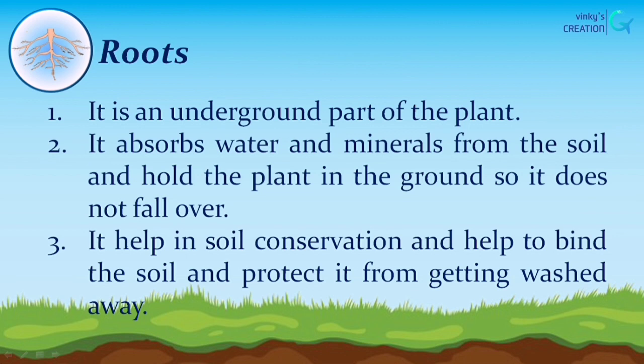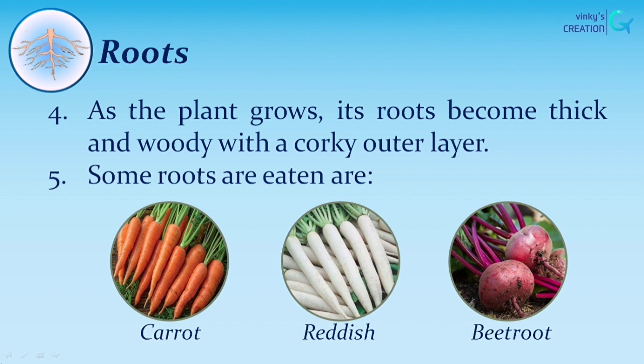Now let's learn about roots. Roots are the underground part of the plant. They absorb water and minerals from the soil and hold the plant in the ground so it does not fall over. Roots help in soil conservation by binding the soil and protecting it from getting washed away. As the plant grows, its roots become thick and woody with a corky outer layer. Examples of roots we eat are carrot, radish, and beetroot.